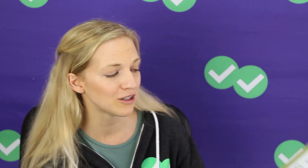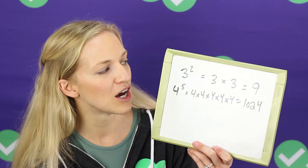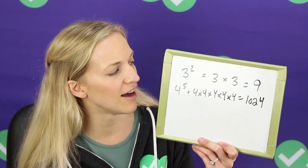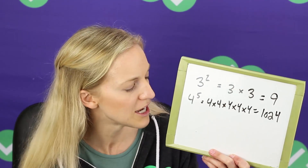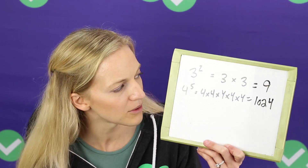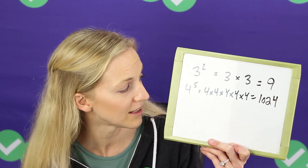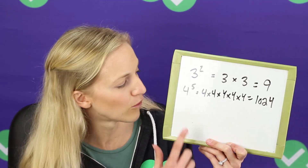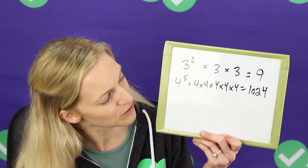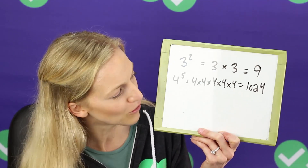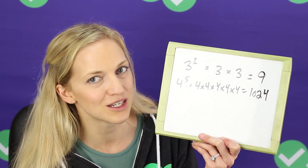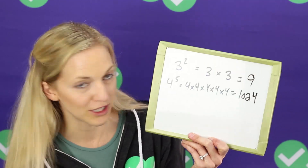Logarithms are simply another way of thinking about exponents. So maybe you're confused about logs, but hopefully you know about exponents. So if I saw three raised to the second power, we know that's three times three, which is nine. And four to the fifth would be four times four times four times four times four, which would equal 1024.